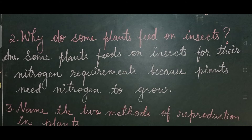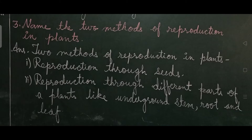Question number two: why do some plants feed on insects? Answer: Some plants feed on insects for their nitrogen requirements, because plants need nitrogen to grow.